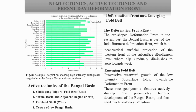This bar plot on screen illustrates earthquake magnitudes in the Bengal Basin and surroundings over 100 years. Along the y-axis is the place of occurrence and time, and along the x-axis is the magnitude of earthquake. For simple understanding, we can divide the Bengal Basin into four parts on the basis of active tectonics: the Chittagong-Tripura fold belt to the east, the Surma basin and adjacent region to the north, the foreland shelf to the west, and the center of the Bengal Basin.